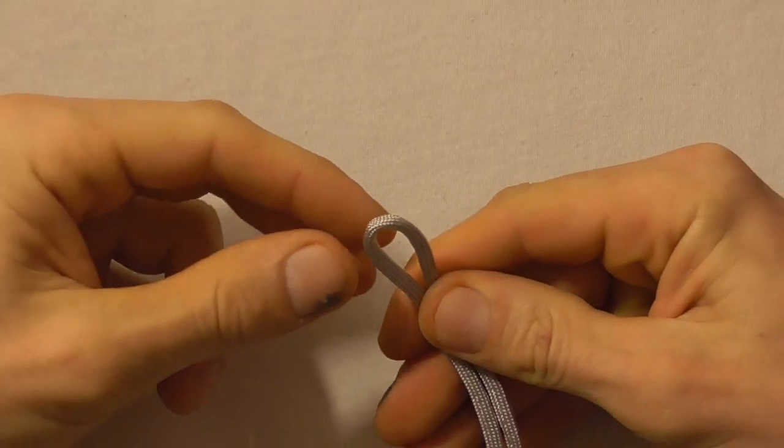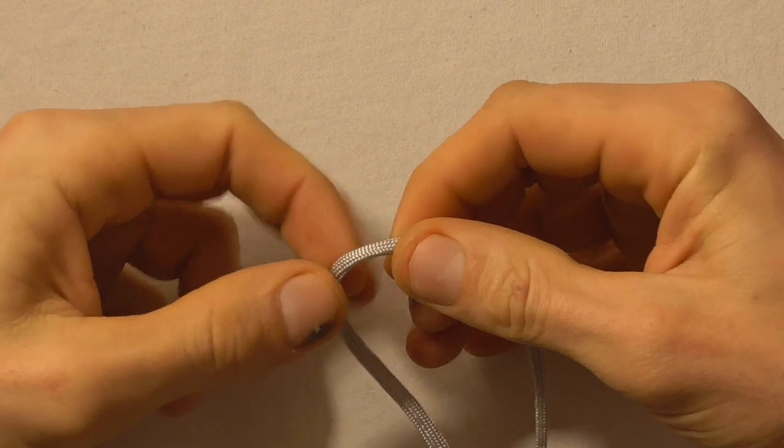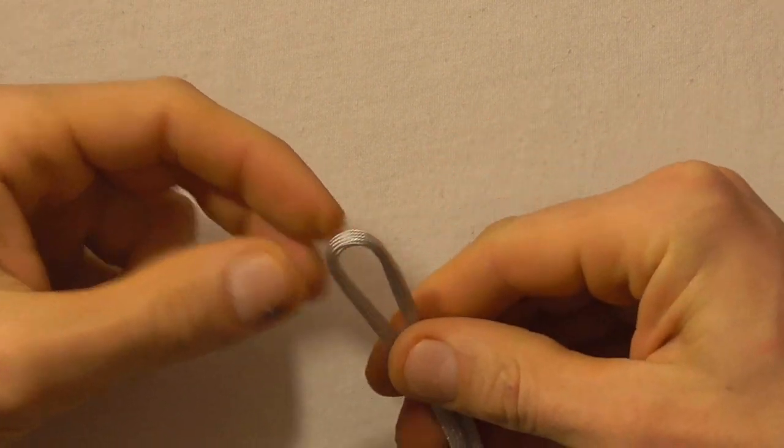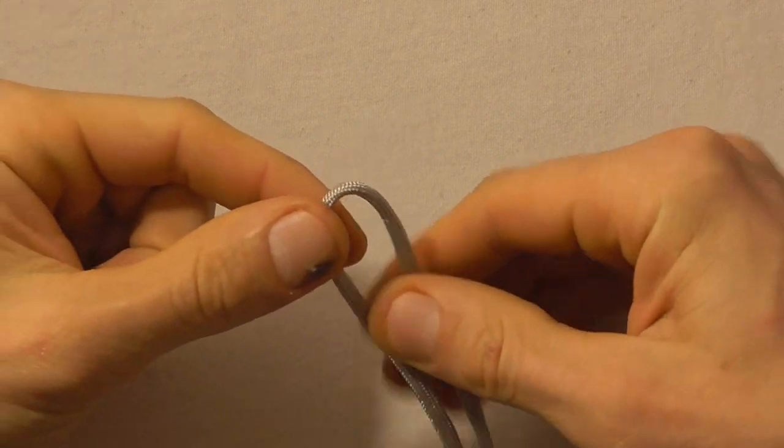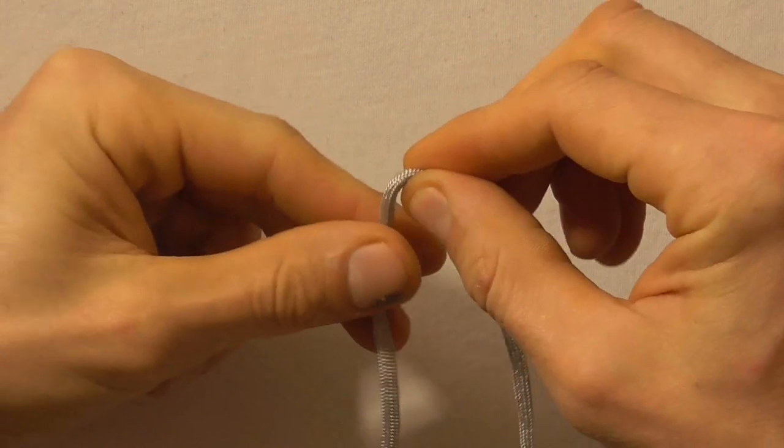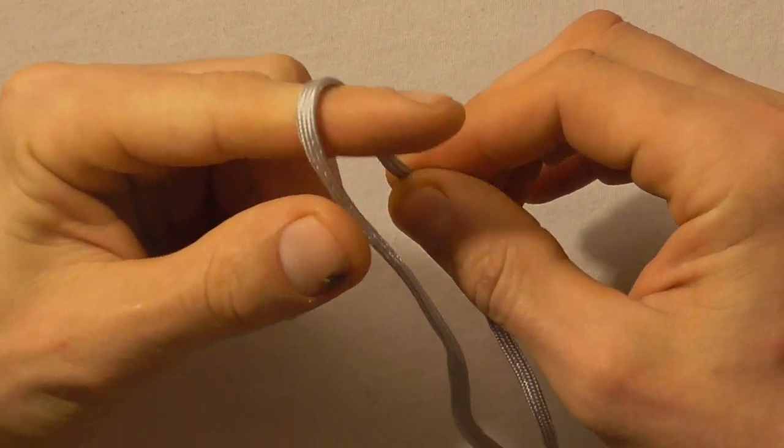To make this one today I'm using 160 centimeters of paracord and you want to start off by finding the center of that paracord and just pinch it off. We need to make the loop closure first so we're going to tie an alpine butterfly.